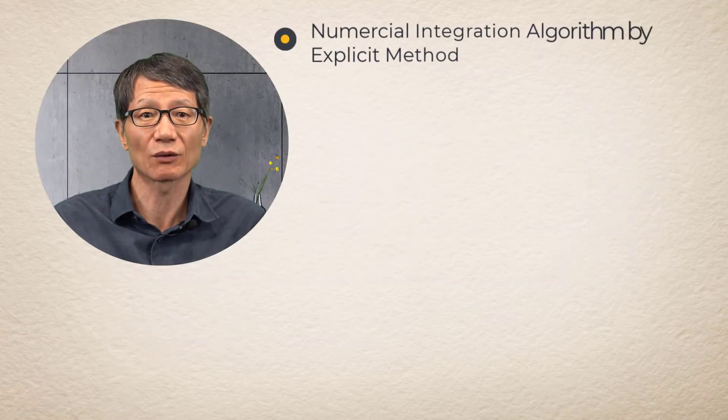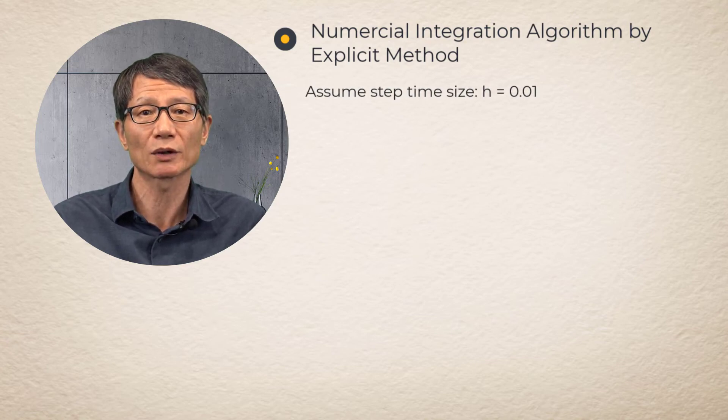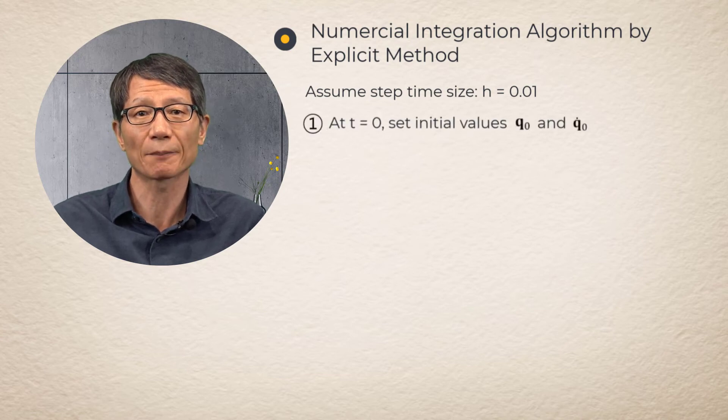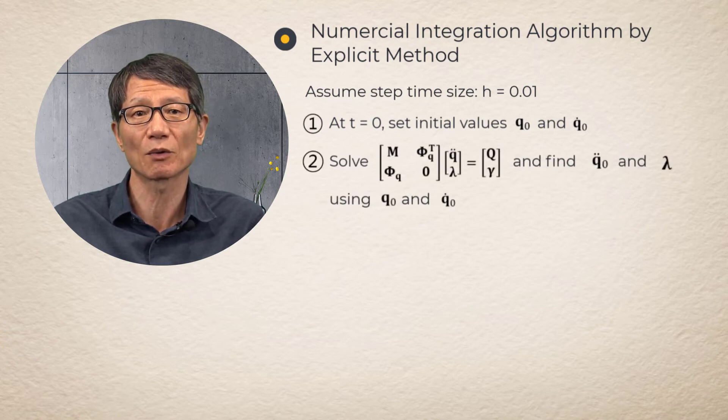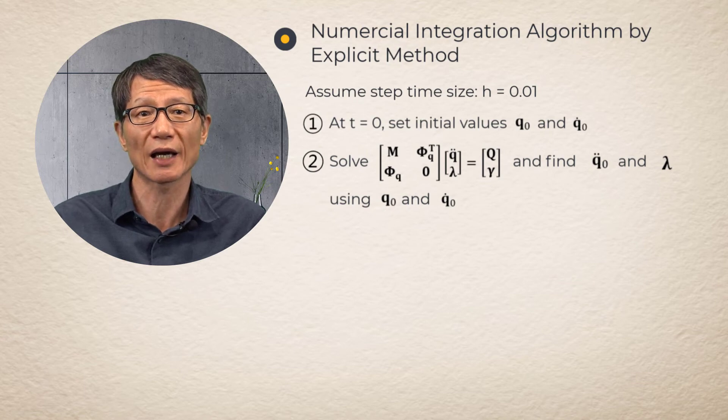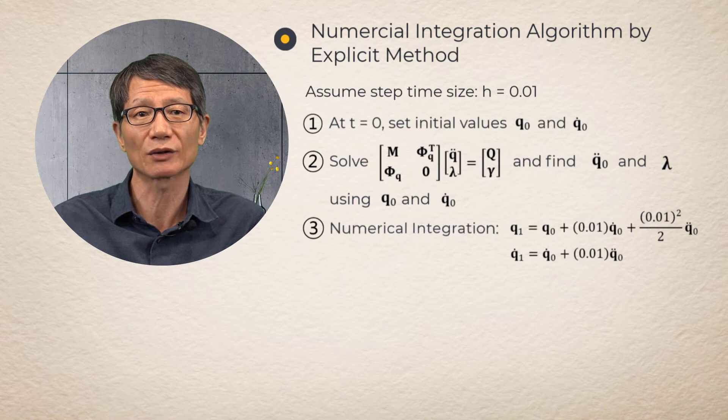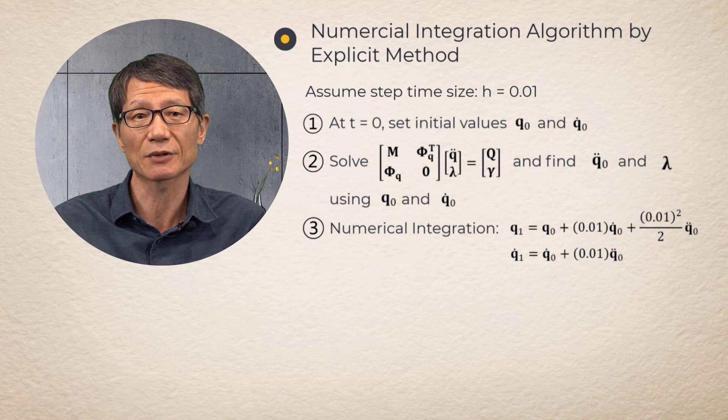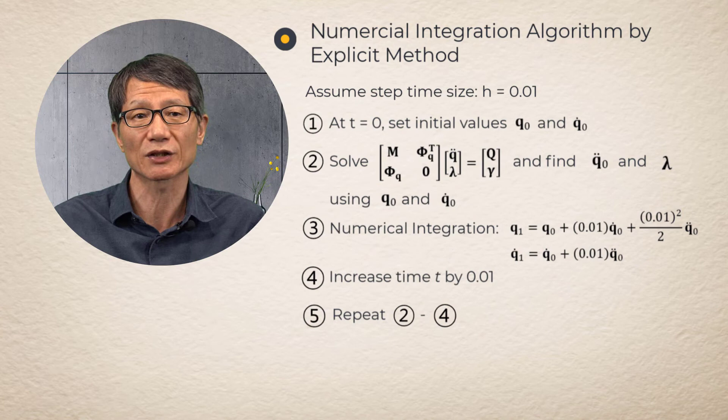Numerical Integration Algorithm by Explicit Method. It is assumed the step size to be 0.01. The first step is to set the positions and velocities to be the initial given values. The second step is to solve the augmented equation of motion for the initial accelerations and Lagrange multipliers. The third step is to carry out the numerical integration for the position and velocities of the next time step. These processes are repeated until the end of the simulation time.